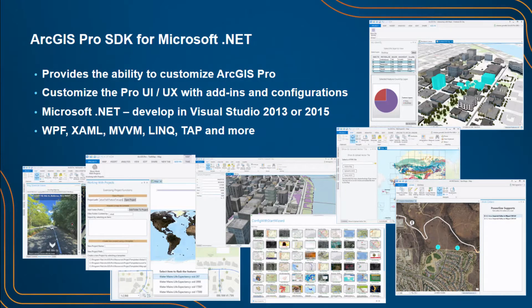Configurations are brand new at 1.4. As you can see in these screenshots, these are all our different community samples, available on GitHub. It's a great place to get started — it's all free code. You can use it to start your own solutions and see how we promote best practices with concepts like WPF, XAML, model-view-view-model, LINQ, and task asynchronous programming — all brought out very well in the community samples.